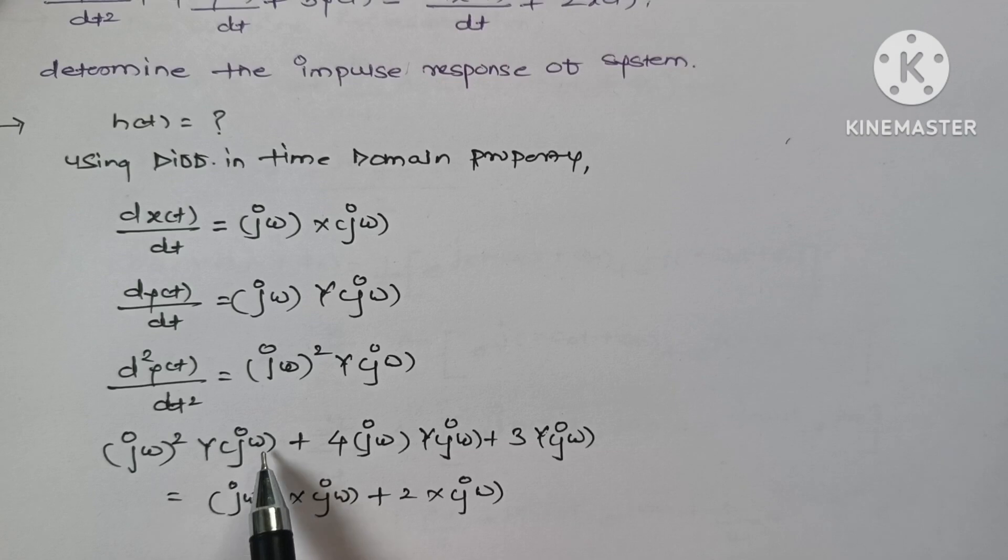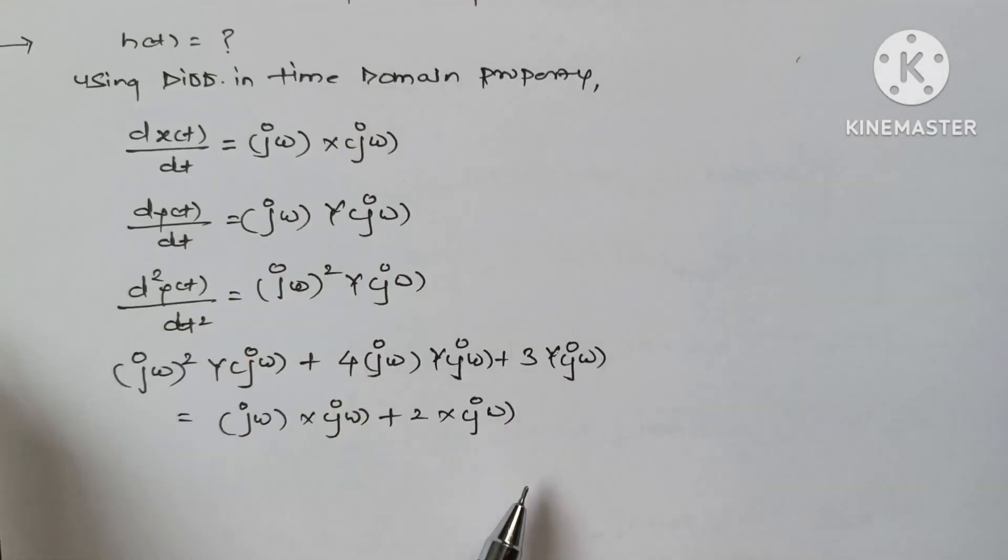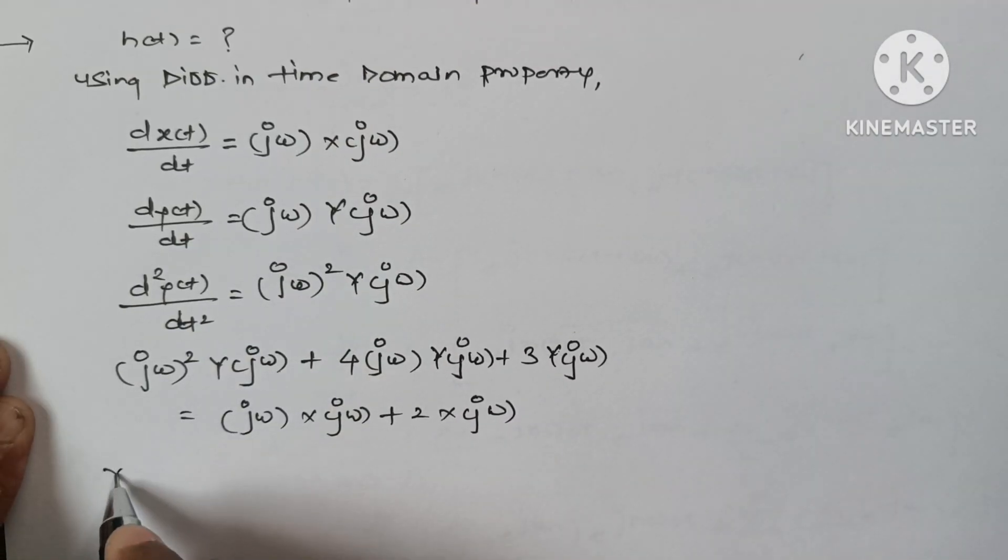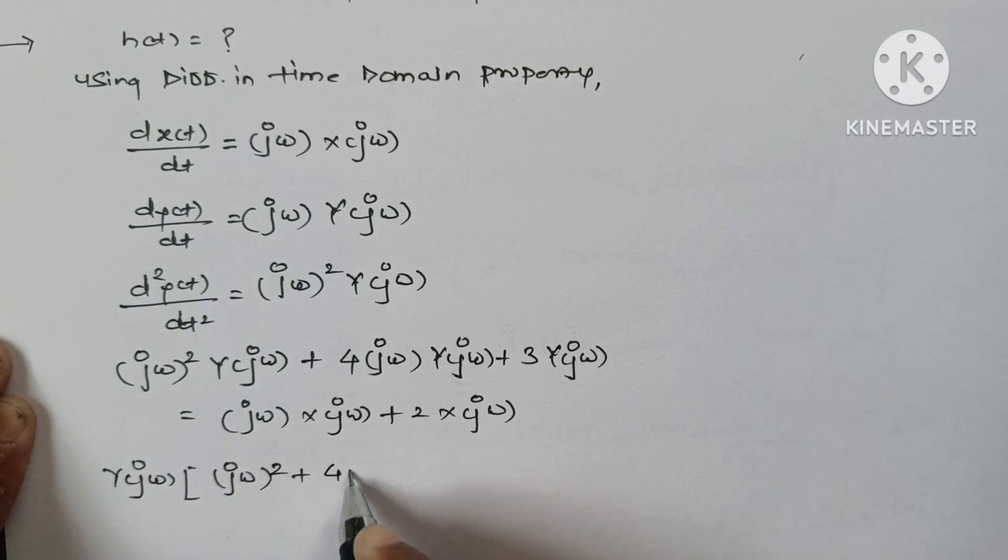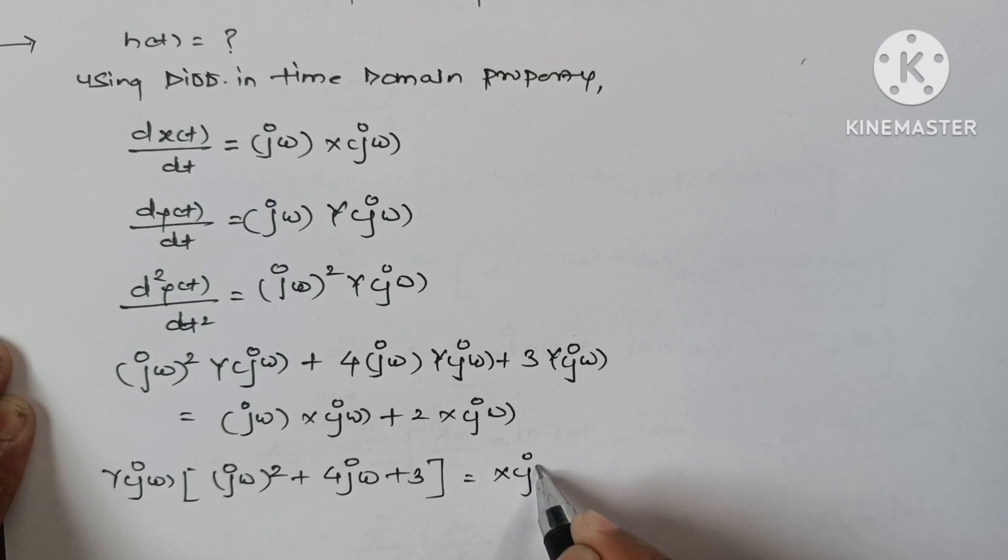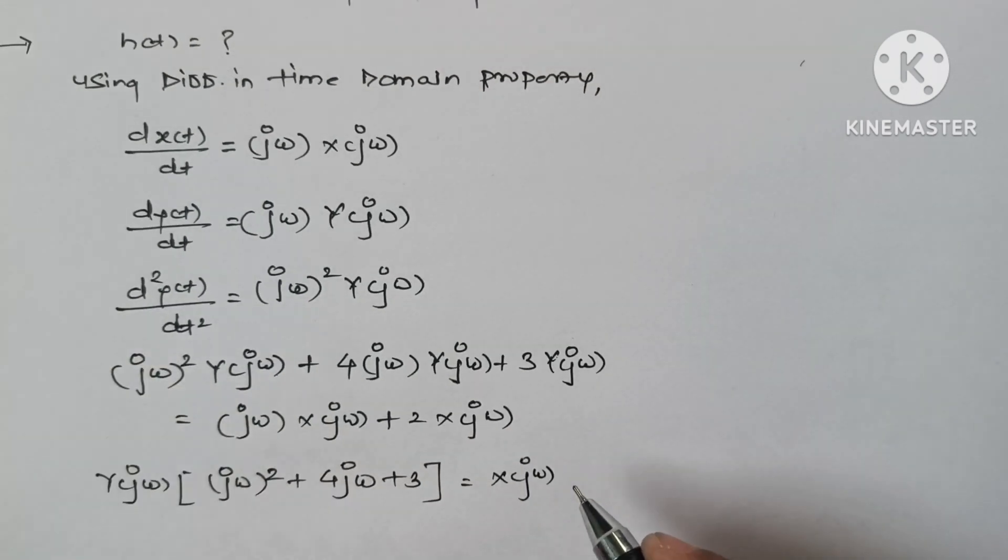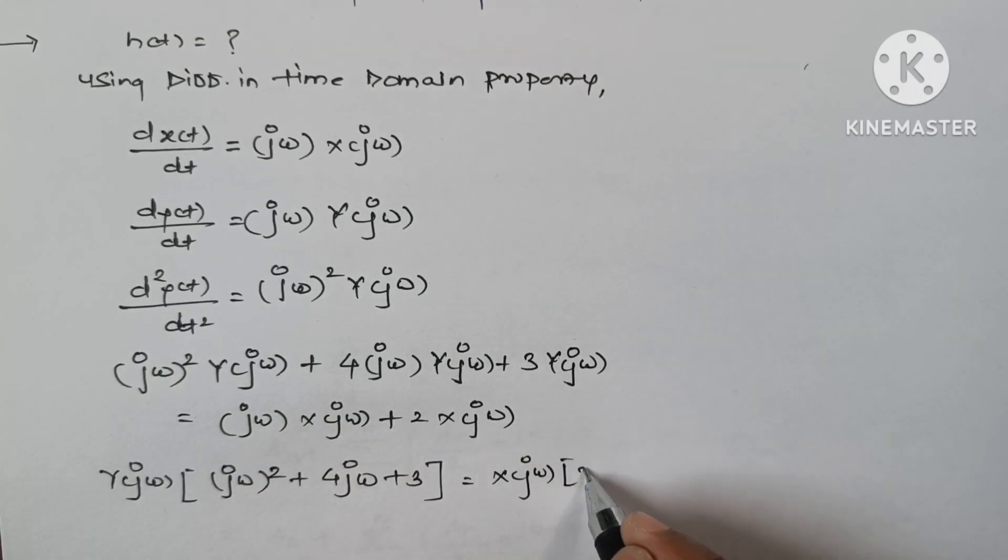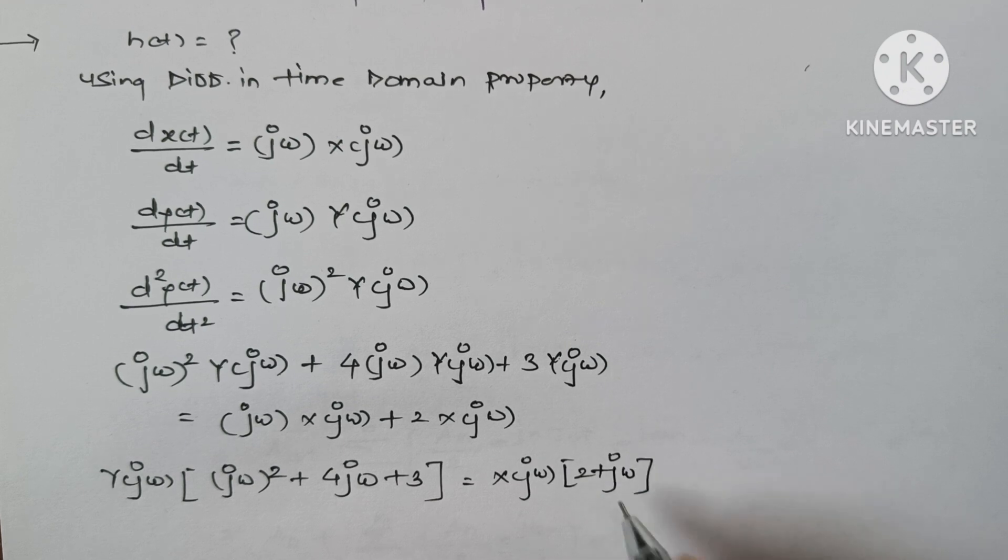From LHS, we take y(jω) common so the terms will get as [(jω)² + 4jω + 3] y(jω) equals [2 + jω] x(jω). Now let's divide output by input.